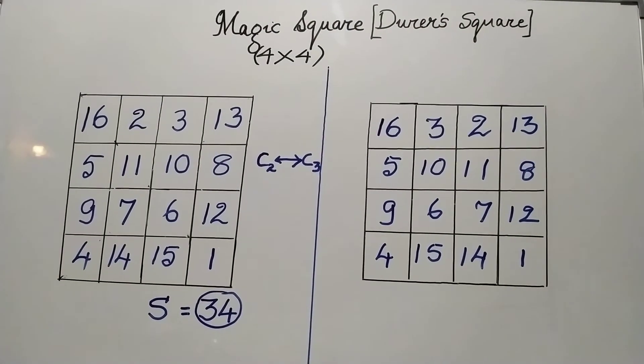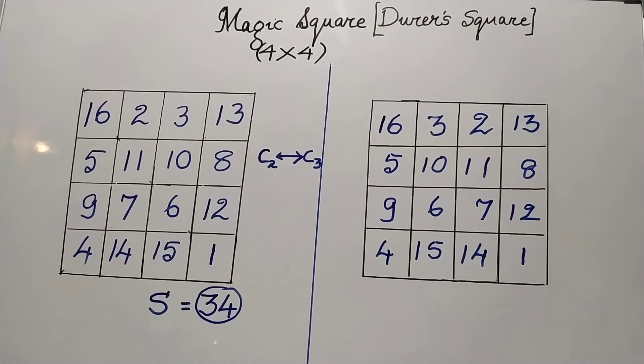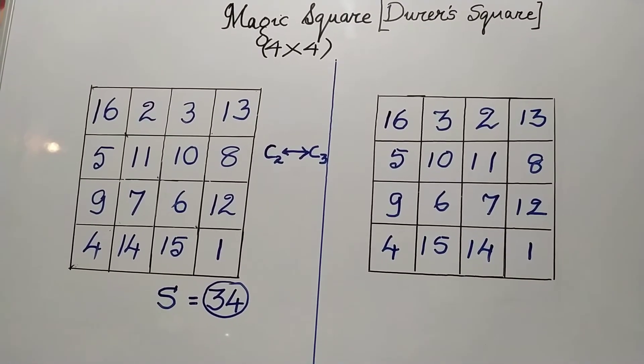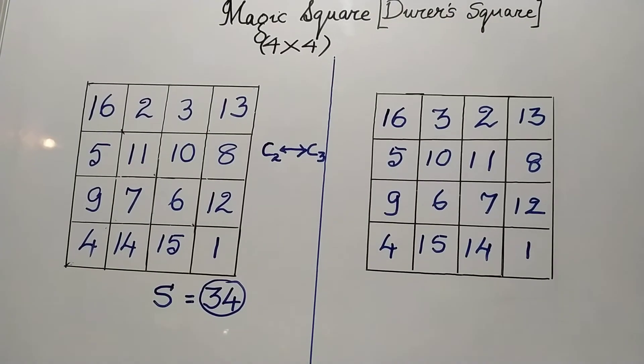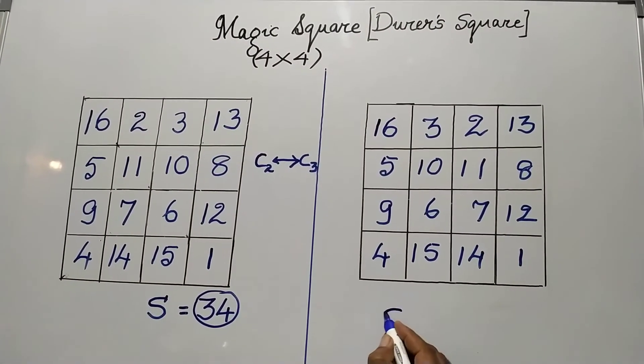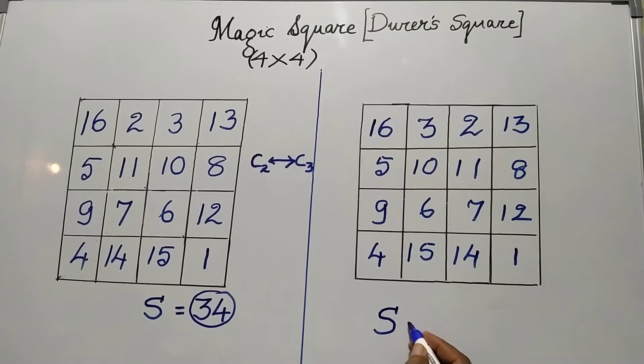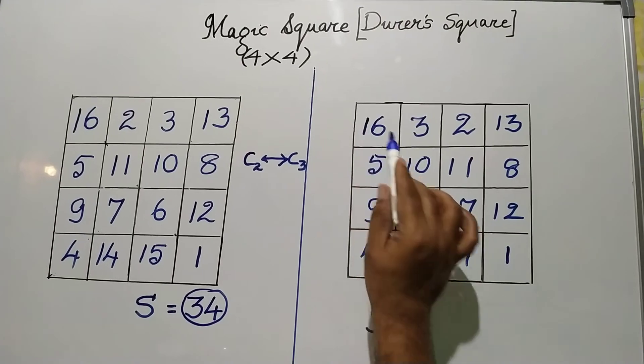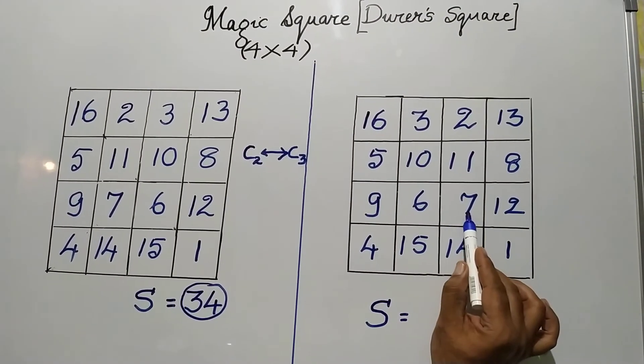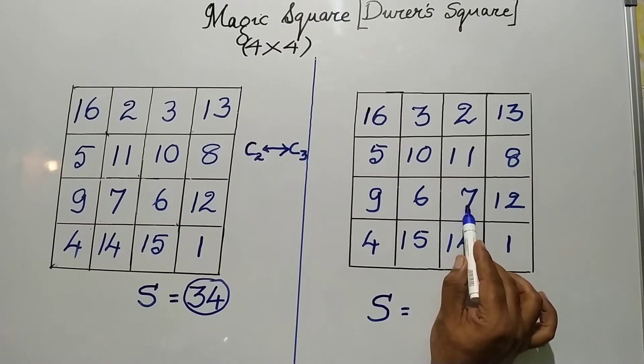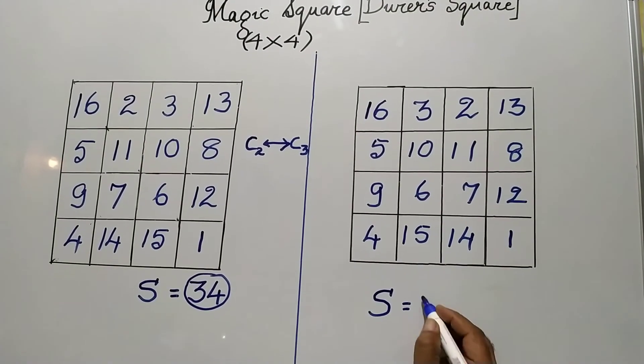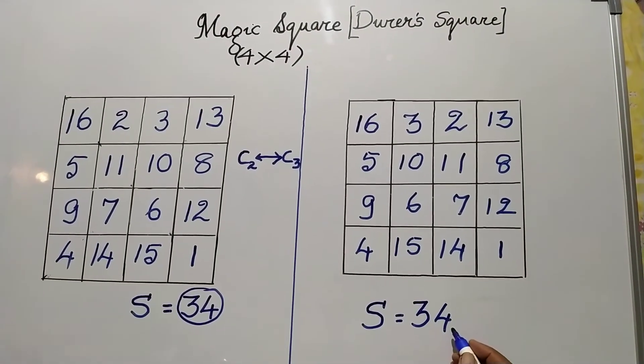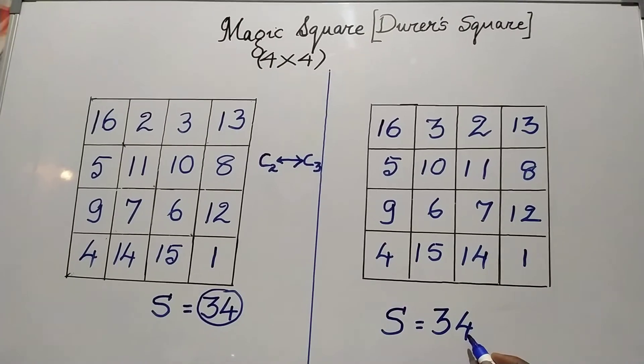This is actually the square which was found on the painting. What is the specialty of this? The magic sum will remain the same. Cross check. I will take the principal diagonal now. 16 plus 10, 26. 26 plus 7, 33 plus 1, 34. This is the magic sum which was the same even before we interchanged the two columns.